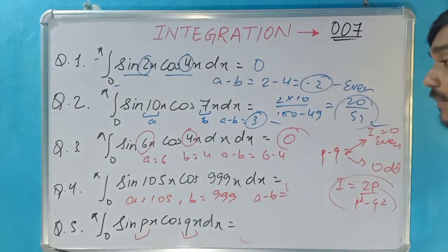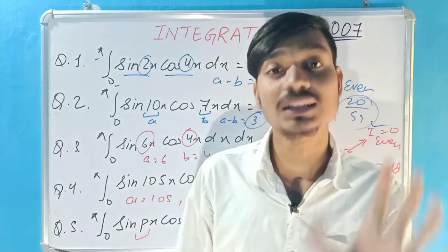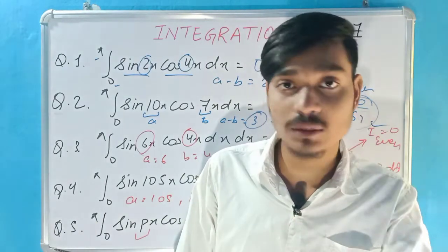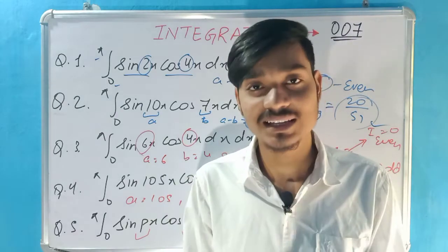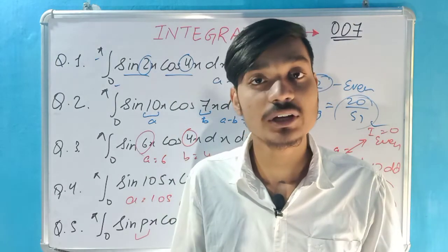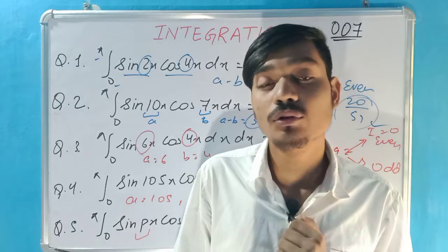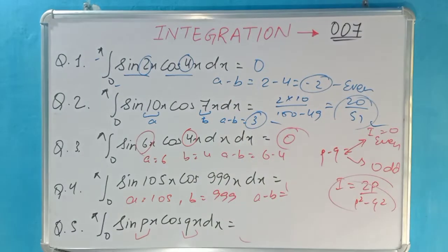For the fifth question, we generalize: we have p and q instead of a and b. Check whether p minus q is odd or even. If p minus q is even, the answer is simply 0. If p minus q is odd, we use the formula 2p over (p² minus q²). That is the complete trick summarized with these five questions.